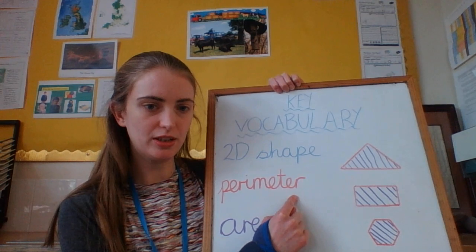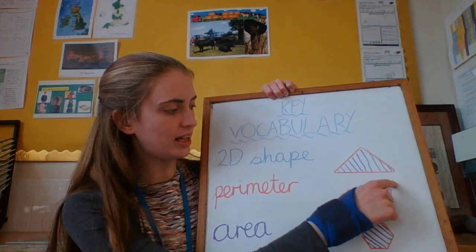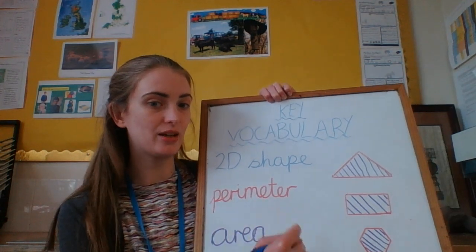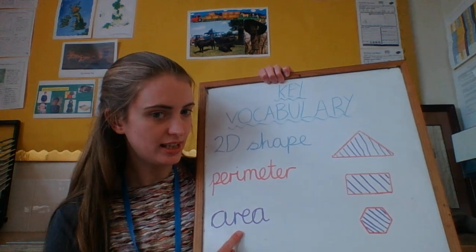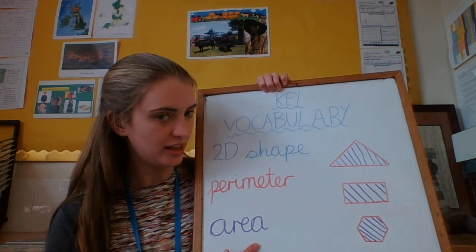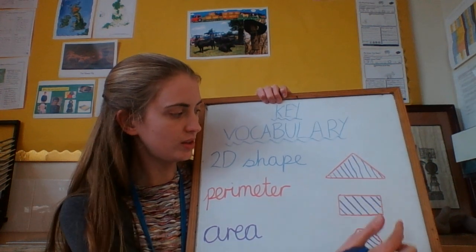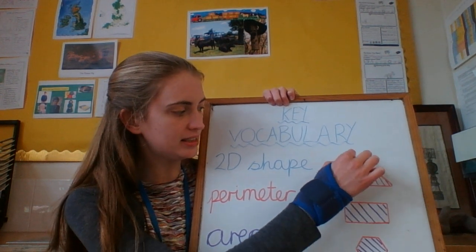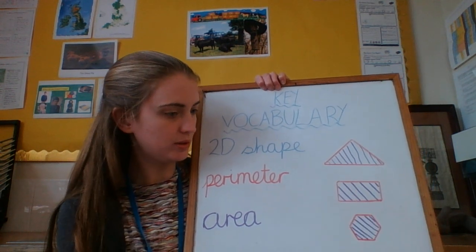We've been looking at perimeter. If you look at these shapes, the bits in red — that is the perimeter. It's the distance around the outside of a shape. Today's word is area. Area is the space inside a shape. So the perimeter is around the outside; area is inside, shown here in purple on these shapes.